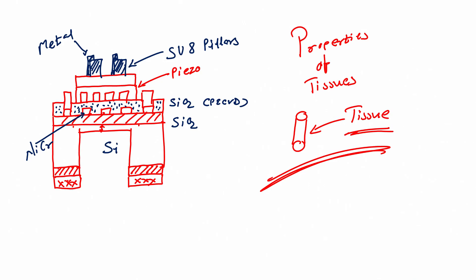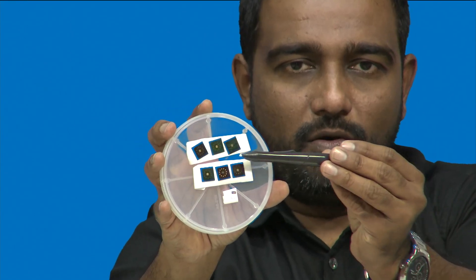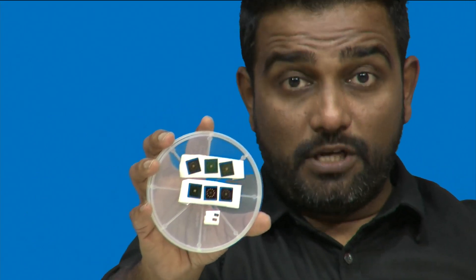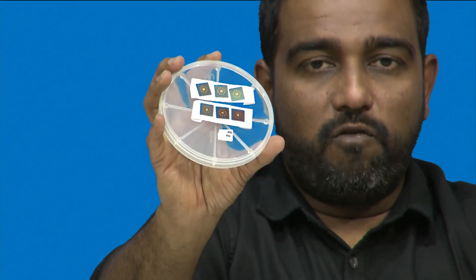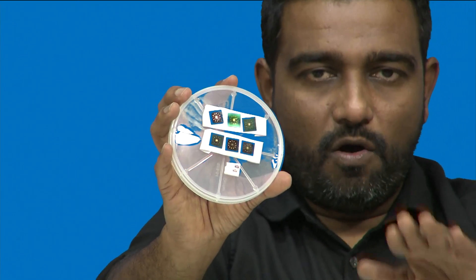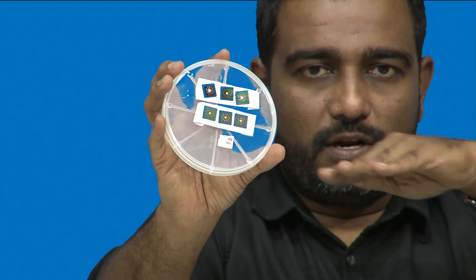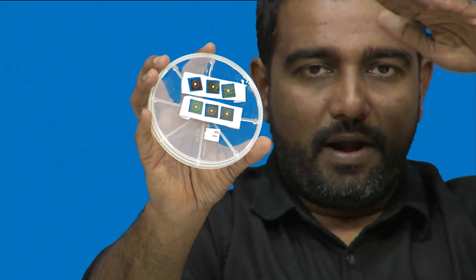Here is the actual biochip — these are the physical chips you can see, the ones you have seen described across all the modules. Focusing on one chip, you can see it has all the sensors discussed in this module. These are oxidized silicon wafers with a heater, insulator, IDEs, piezoelectric material, insulator, gold pad, SU8 pillar, metal on the gold pad, and a diaphragm on the back.